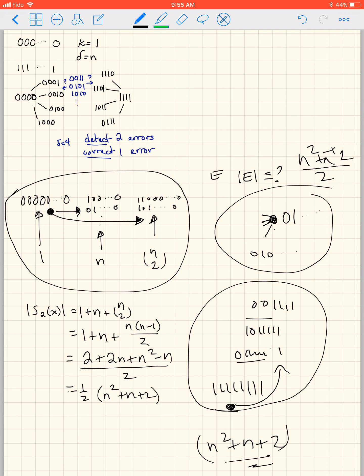If we can correct 2 errors, we know that these spheres are all disjoint. We can't have any overlap between them because if there was overlap, that would mean that any word we received that was in here or here, we wouldn't know where to correct it to. So we can't have that scenario. We've got all these spheres around valid code words and each of them has exactly n squared plus n plus 2 over 2 words in it, and then there may be other words that we won't worry about them.